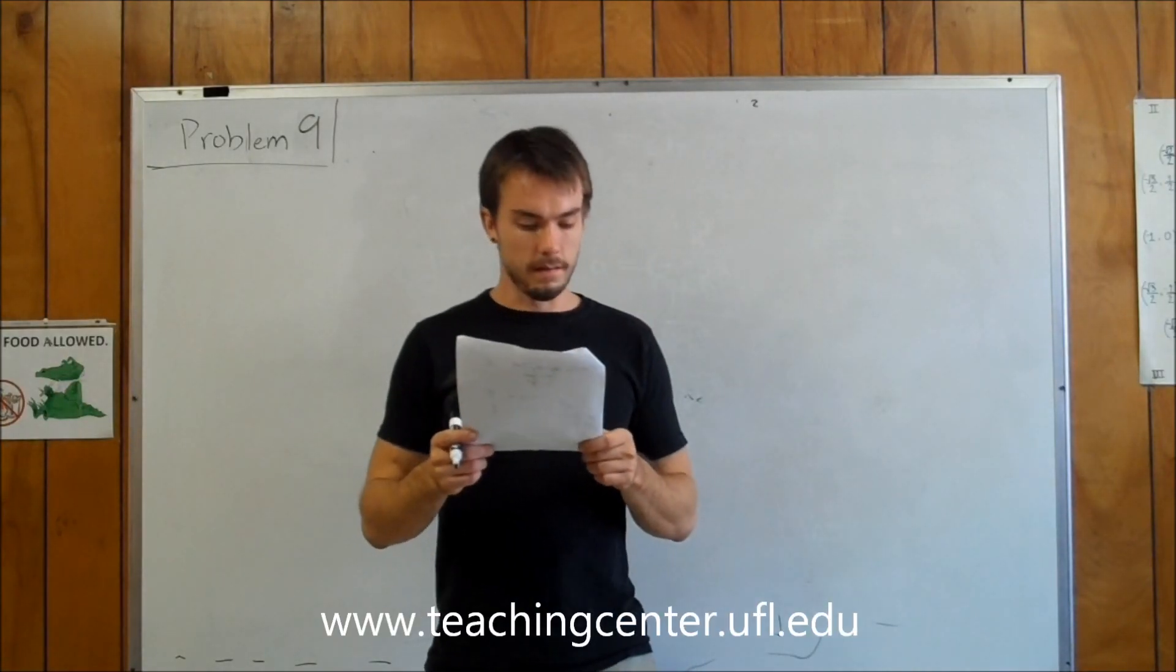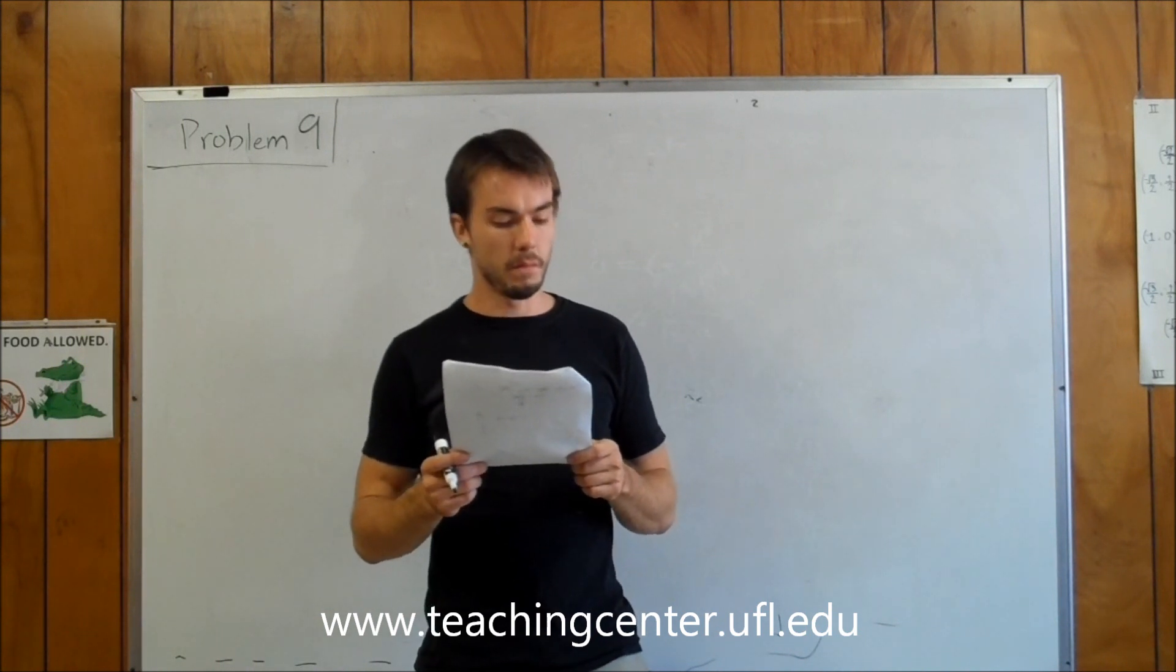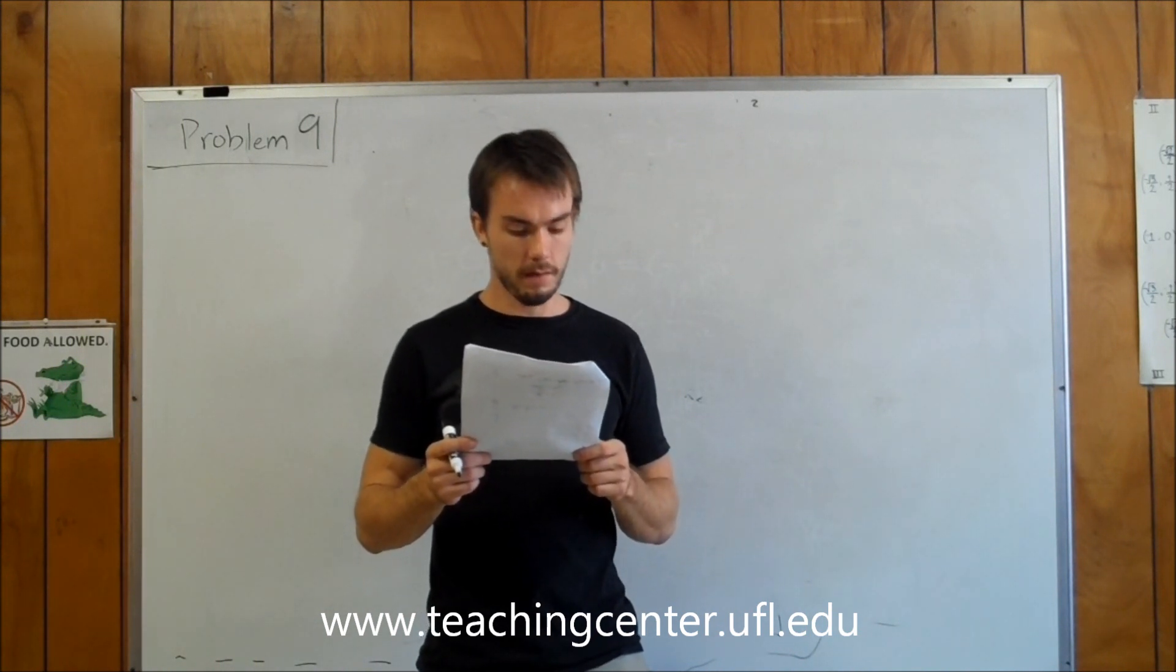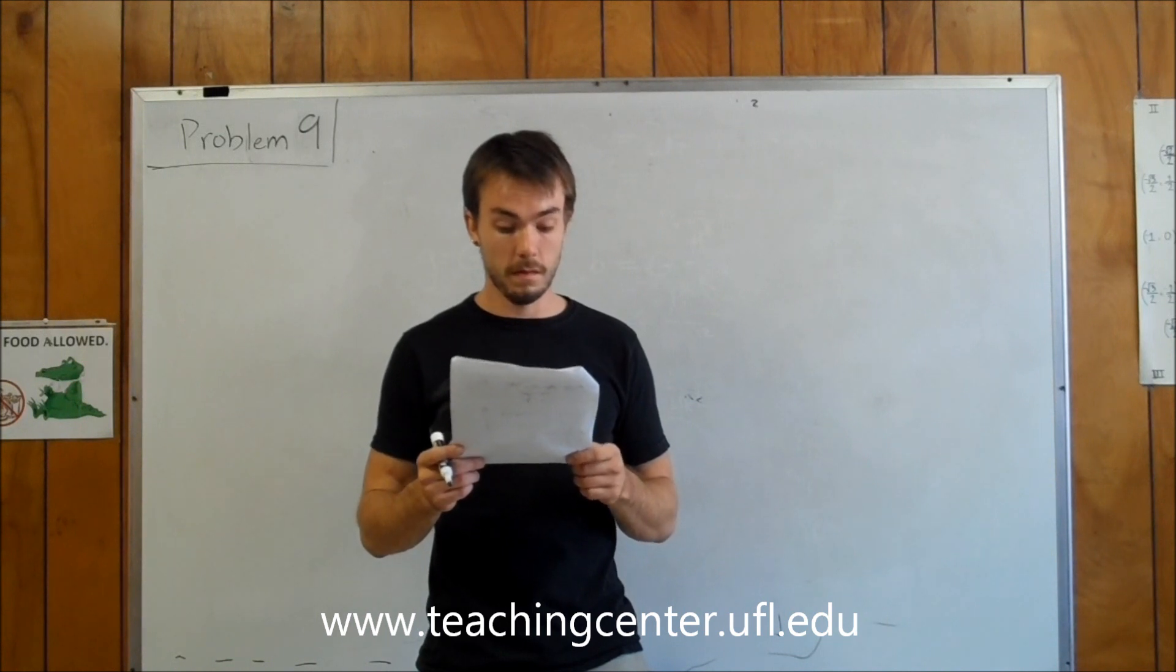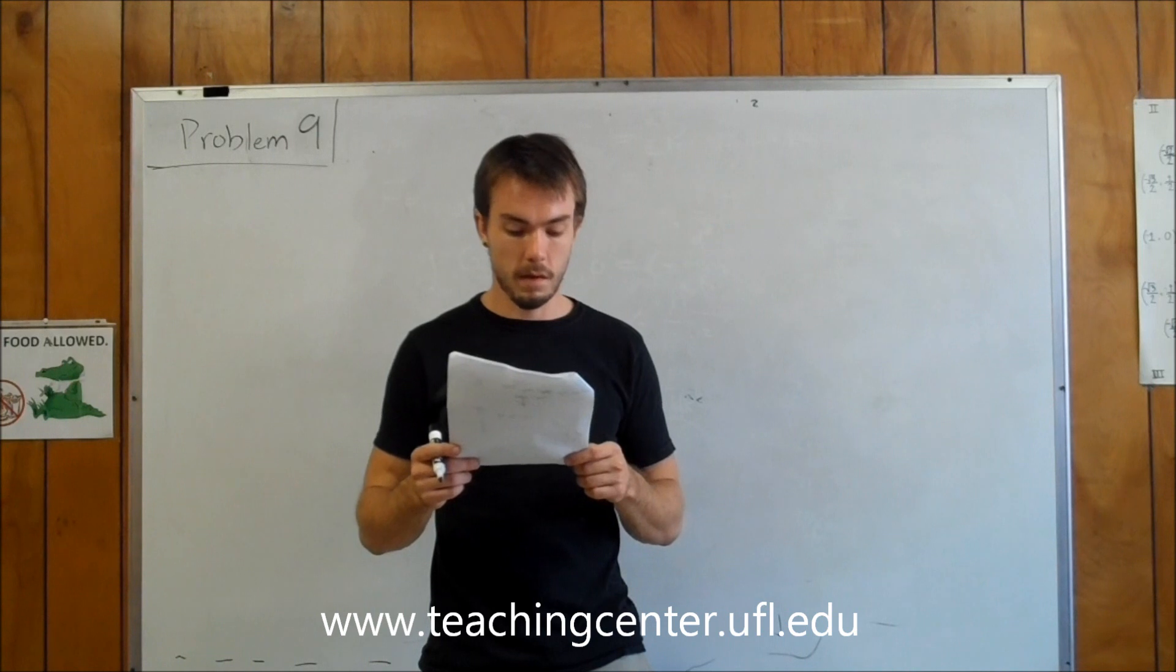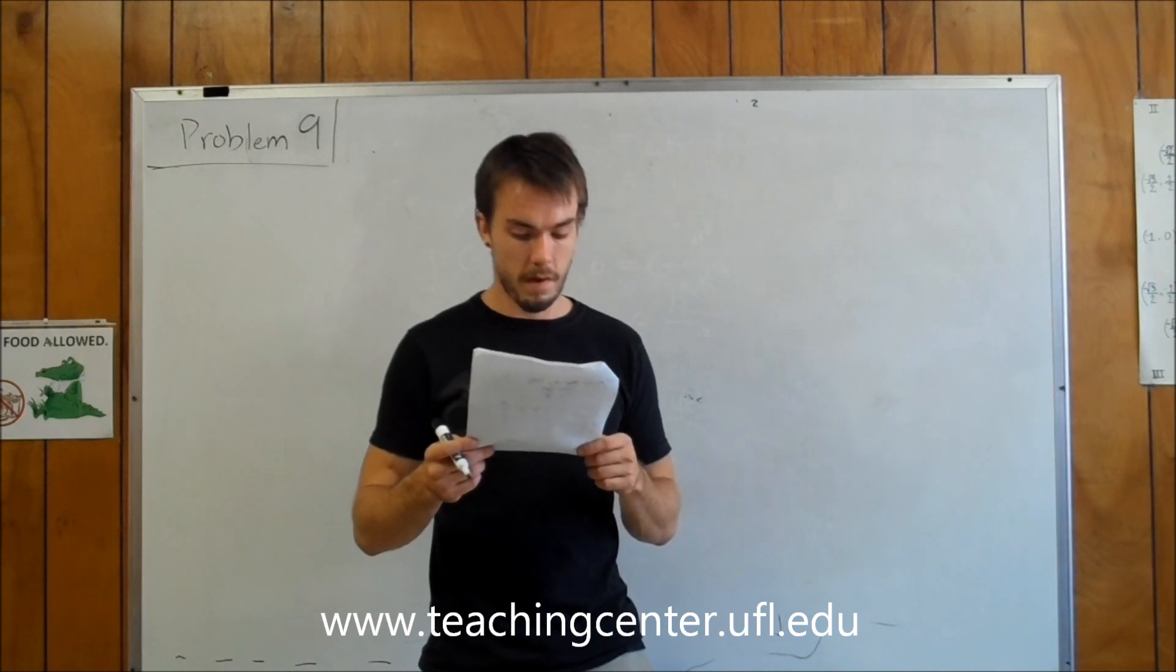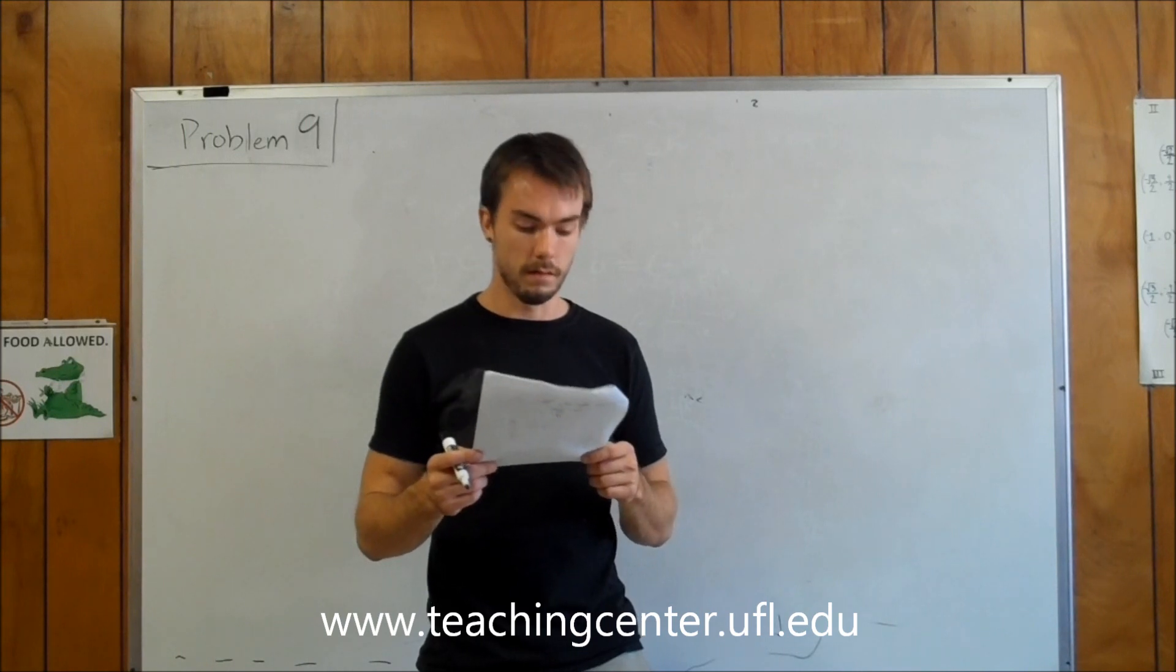Okay, problem 9 says the platform is oscillating vertically, up and down with an amplitude A equals 0.4 meters. A block of mass M equals 2 kilograms sits on the platform but is not attached to it. The angular frequency omega starts out small and slowly increases. For what value of omega does the block start to bounce on the platform? Give the answer in radians per second.